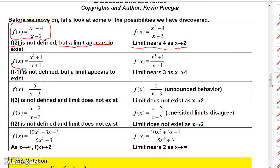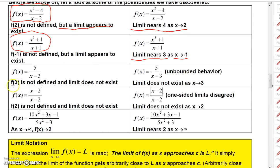This function is not defined at negative 1, but a limit appears to exist. We found that the limit gets near 3 as x approaches negative 1. This function is not defined at 3, but a limit does not exist either, because this one had that unbounded behavior — as we approach 3 from one side or the other, the graph increased or decreased without bound.